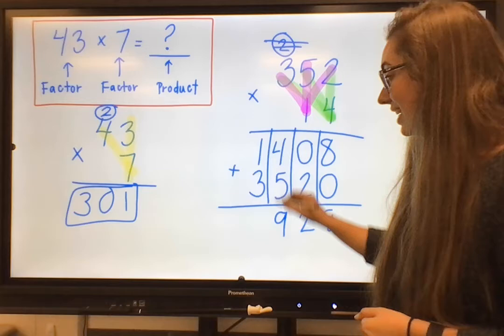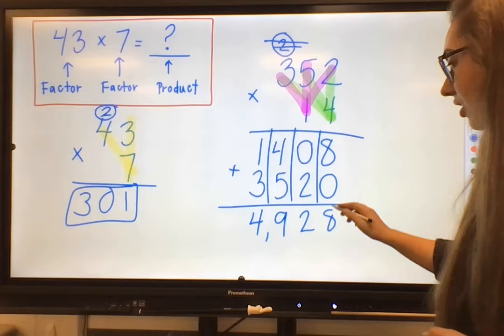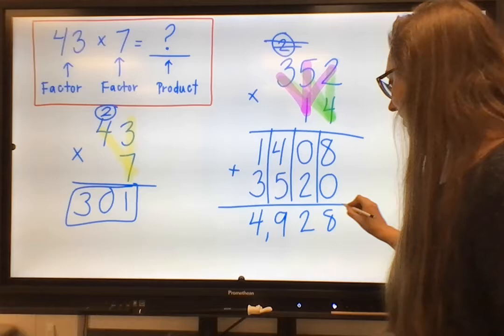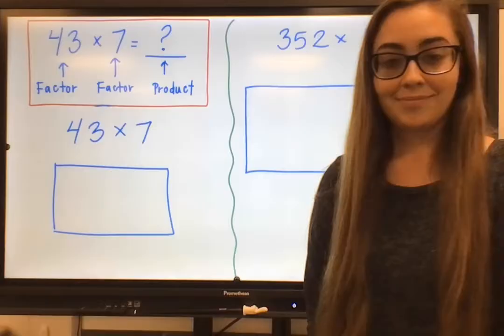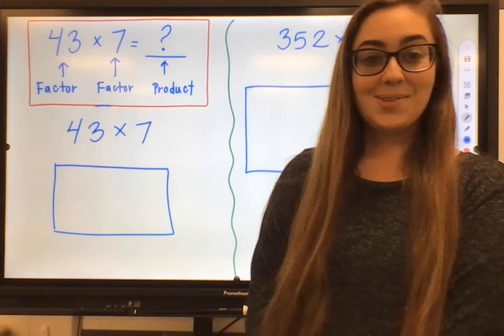So just adding those straight down, 8 plus 0, 8, 0 plus 2, 2, 4 plus 5, we would know that to be 9, and 1 plus 3 is 4. We add that comma just to make sure that we have our thousandths place accentuated. We know that that fourth digit is going to be that thousandths place. We put a box around our final answer, 4,928.